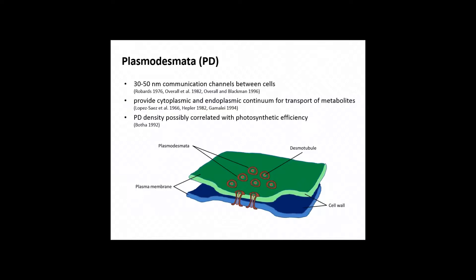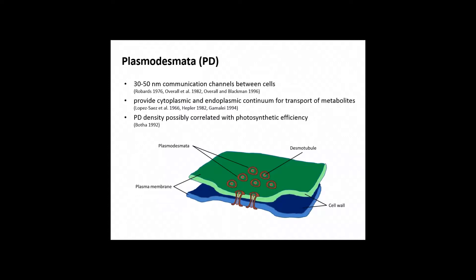Before I start, I'll talk about my project on plasmodesmata, or PD. They are nanostructures responsible for providing both cytoplasmic and endoplasmic continuum, essentially for transport of metabolites. Working with Susana von Caemmerer as a PhD student on photosynthesis, we found that plasmodesmata, in previous literature, was possibly correlated with photosynthetic efficiency. So we wanted to look at the difference between C3 and C4 plants.